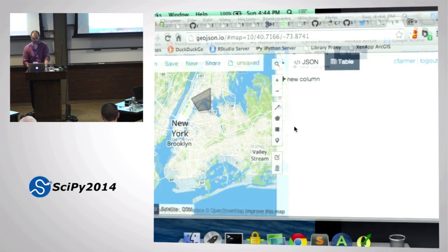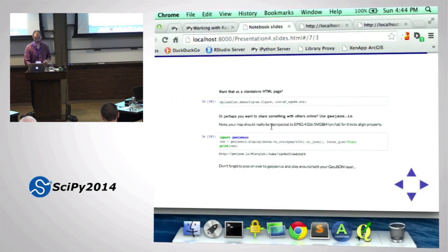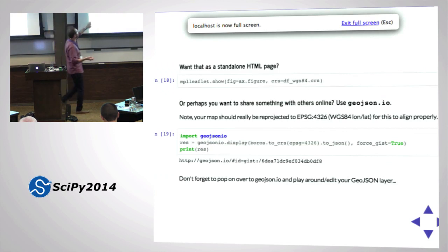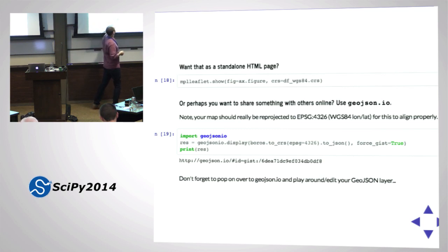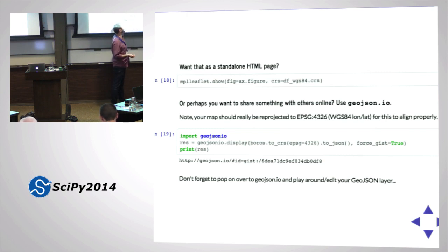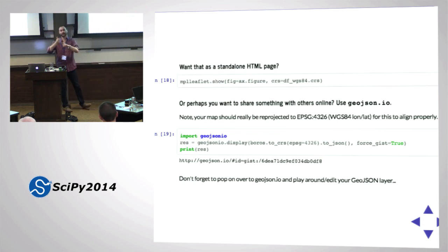To do this: import geojsonio, geojsonio.display(). Here's something cool: boros is the shapefile I read in as a GeoPandas DataFrame. I convert it to WGS84 on the fly and output it as GeoJSON. In one line I've reprojected it, converted to GeoJSON, and fired it off to the internet for colleagues to interact with. I could query a database, reproject, buffer geometry, export to JSON, and fire it to the internet - all in one line of Python.